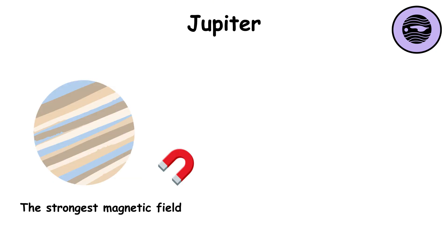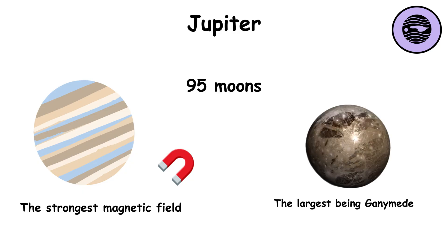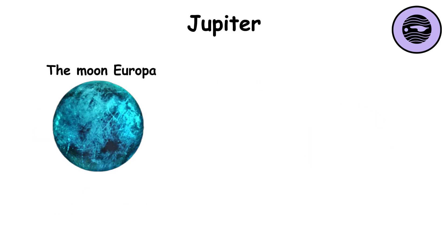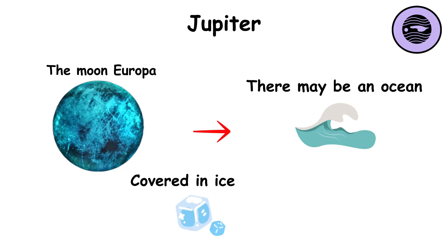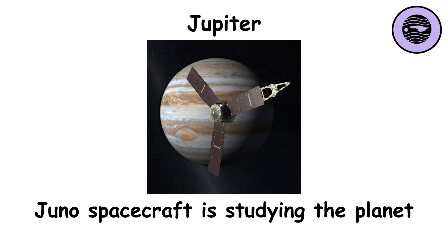Jupiter has the strongest magnetic field and 95 moons, with the largest being Ganymede. The moon Europa is covered in ice, and beneath it, there may be an ocean. The Juno spacecraft is studying the planet, and future missions will examine its moons.